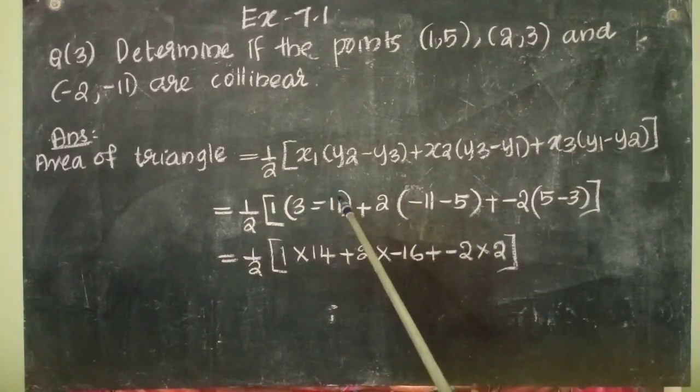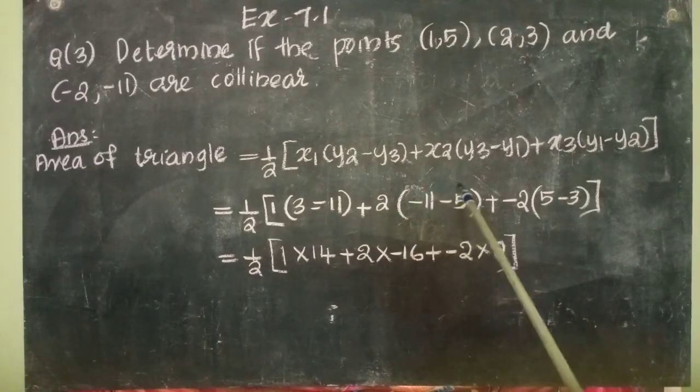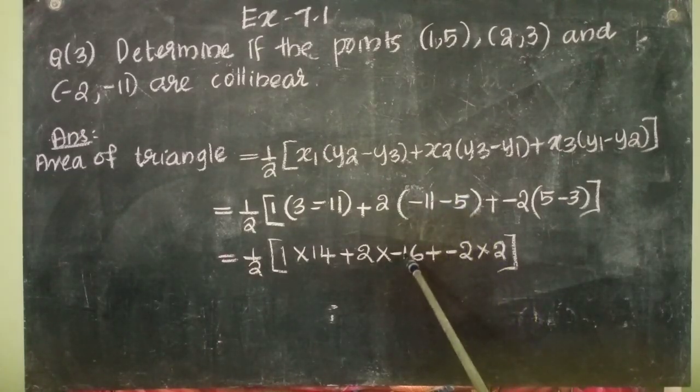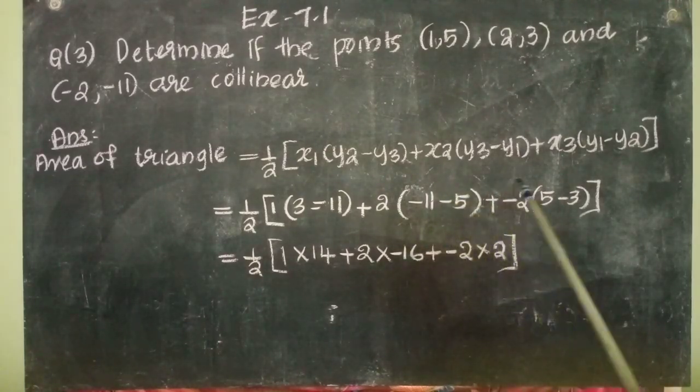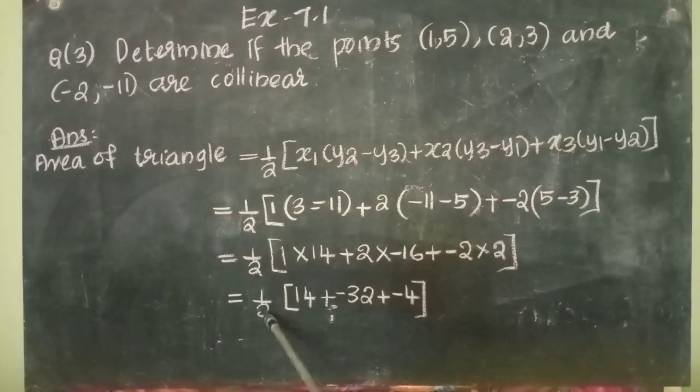3 minus (-11), it is 3 plus 11 equals 14. -11 minus 5, it is -16. 5 minus 3, it is 2. That is equal to half into 14 plus (-32) plus (-4).